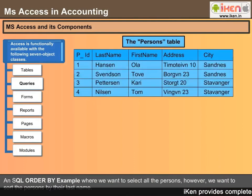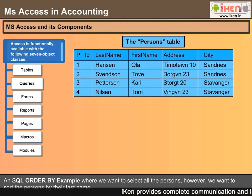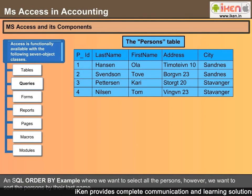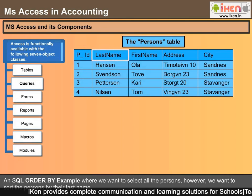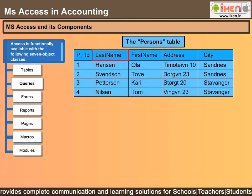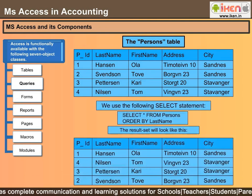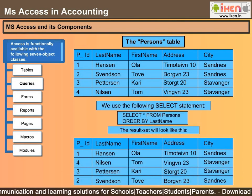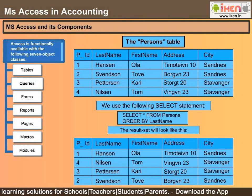Here is an SQL ORDER BY example, where we want to select all the persons but sort them by their last name from the table below. We use the following SELECT statement and the result set will look like this.